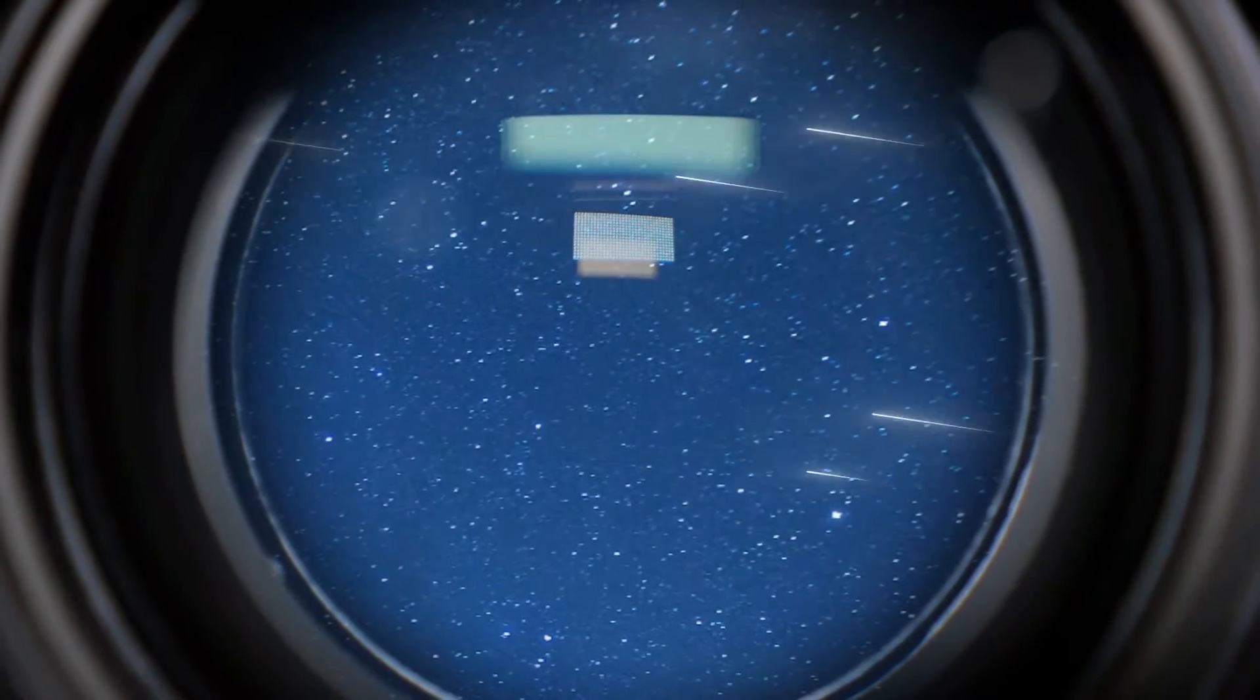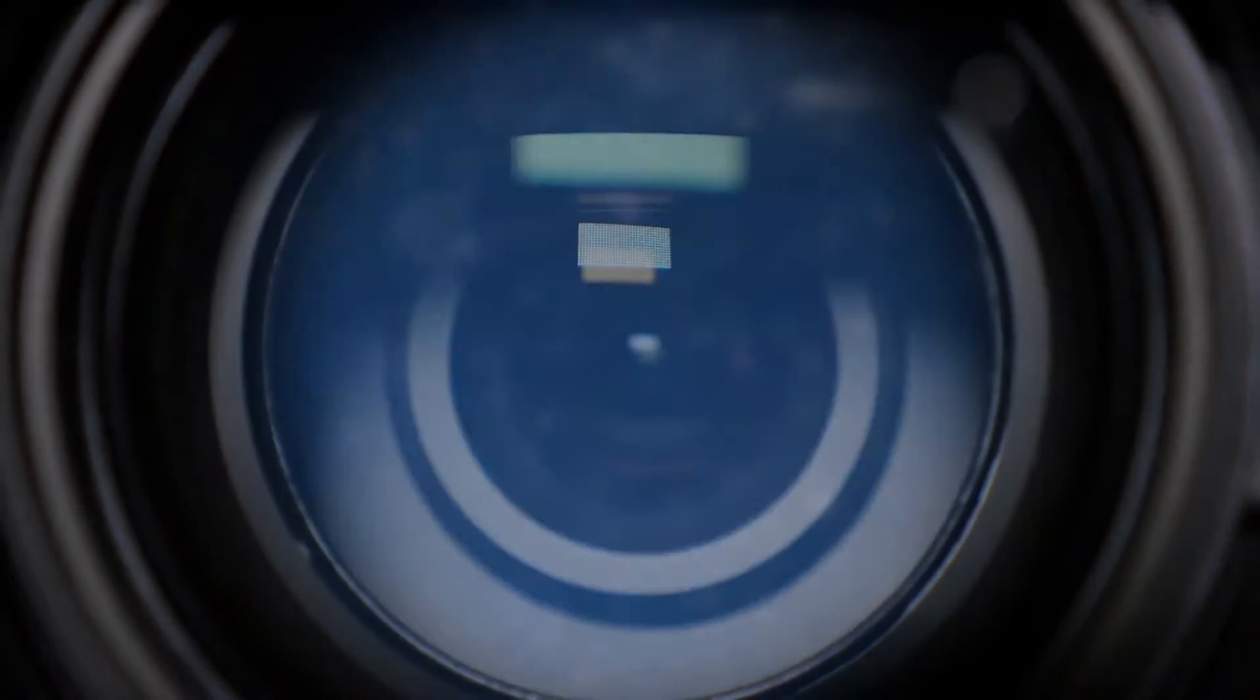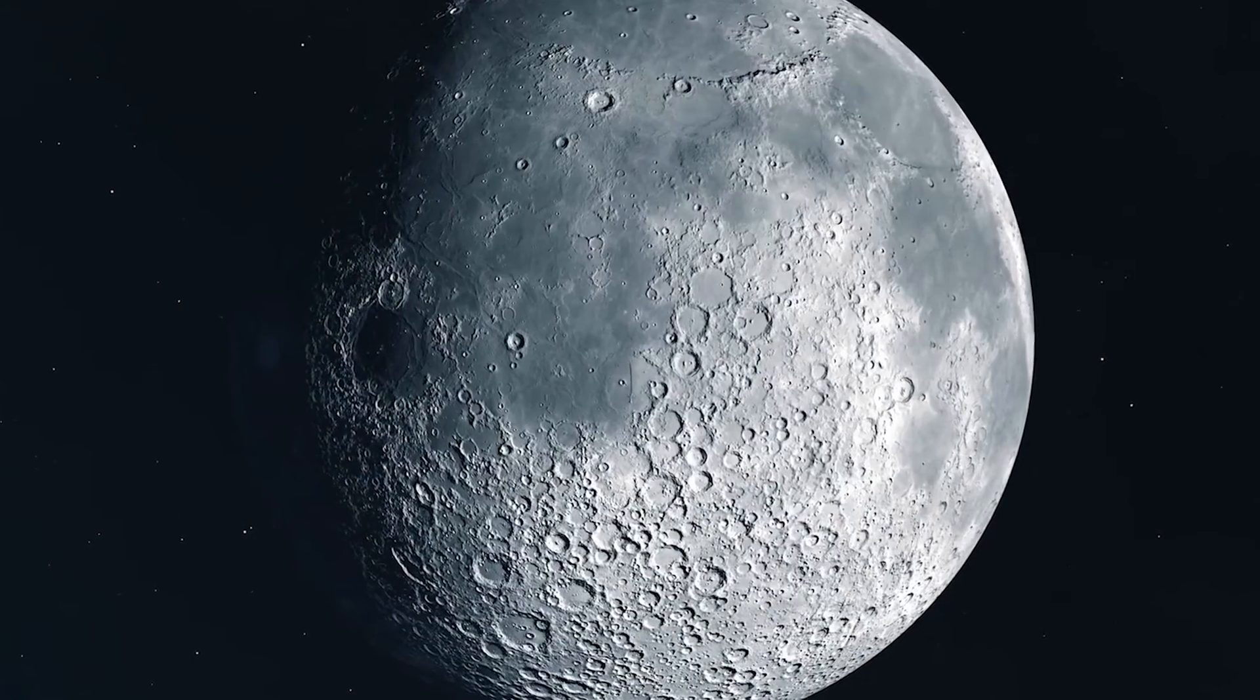To produce a magnified image, light enters the telescope through the lens or mirror at the front end. The light then passes through the lenses or mirrors inside the telescope that further refract the light and cause the image to be magnified.